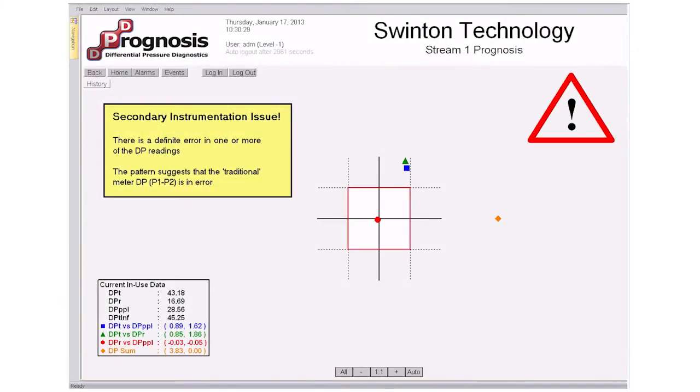Again, a malfunction is indicated straight away, only this time the pattern of the results tells us that there is a definite issue with the DP readings. What's more, the pattern tells us which DP is in error. In this case, it is the traditional meter DP, which will be causing a significant bias in the meter's flow rate prediction.